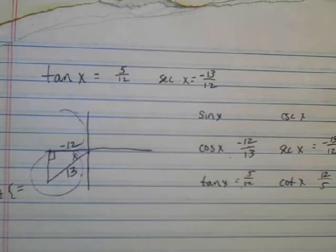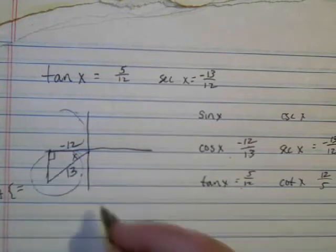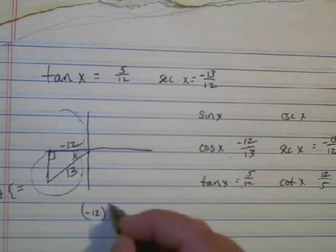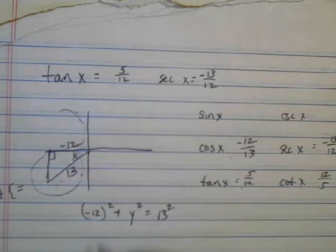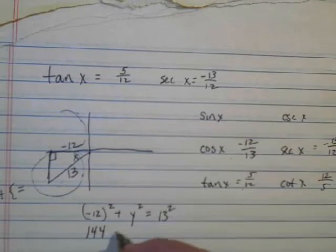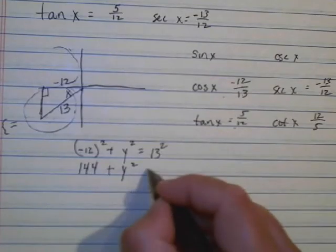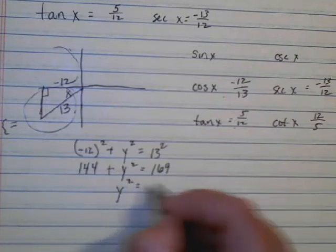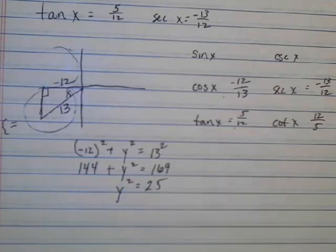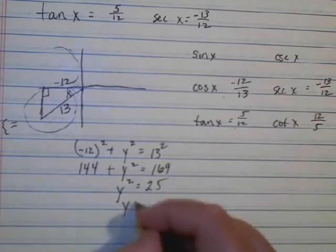Now I have to find this side. So I'm going to do negative 12 squared plus, I don't know this side, I'm going to let it be y, equals 13 squared. So I have 144 plus y squared equals 169. So y squared equals 25. So y equals 5.